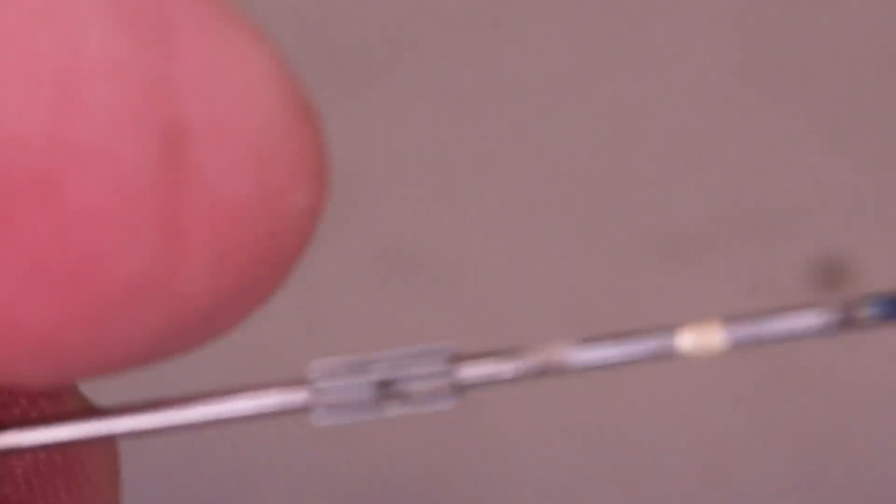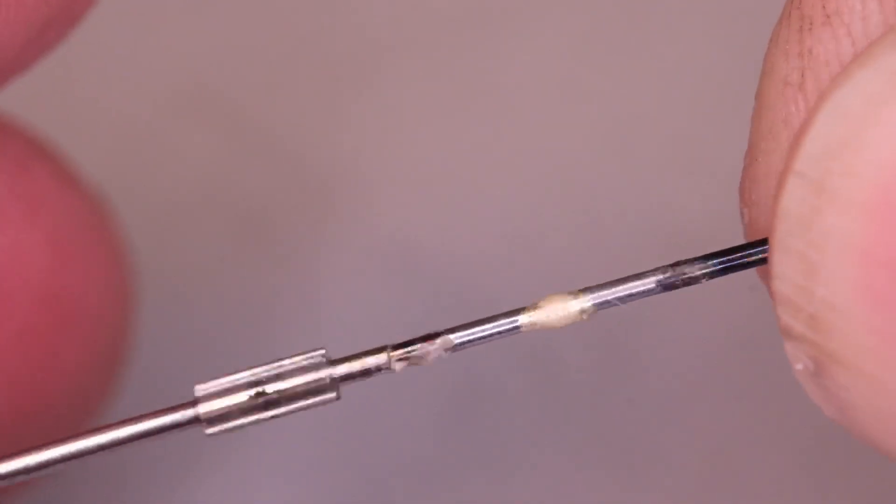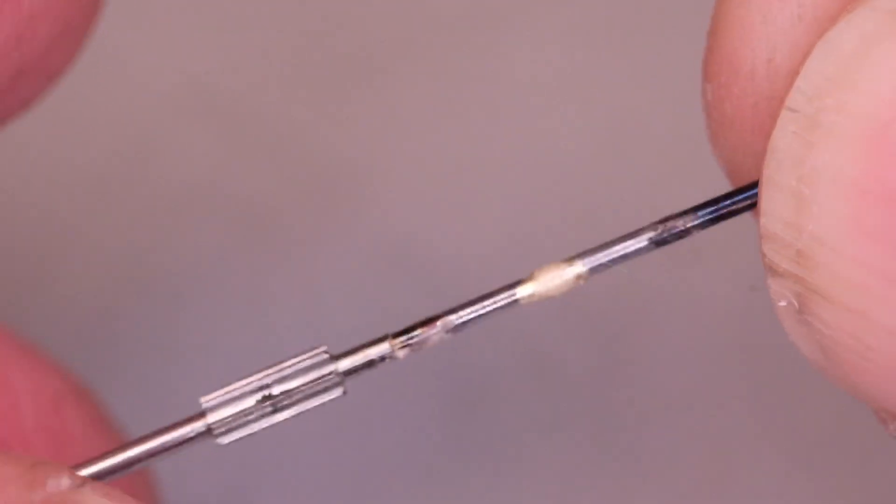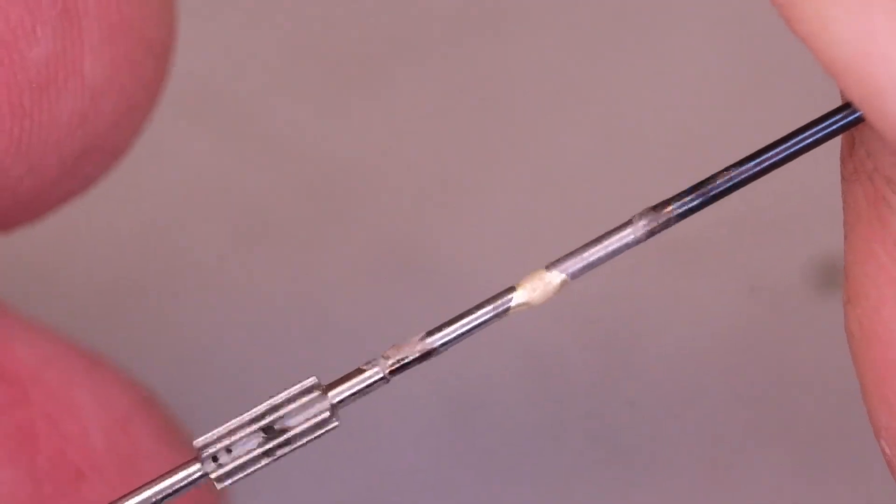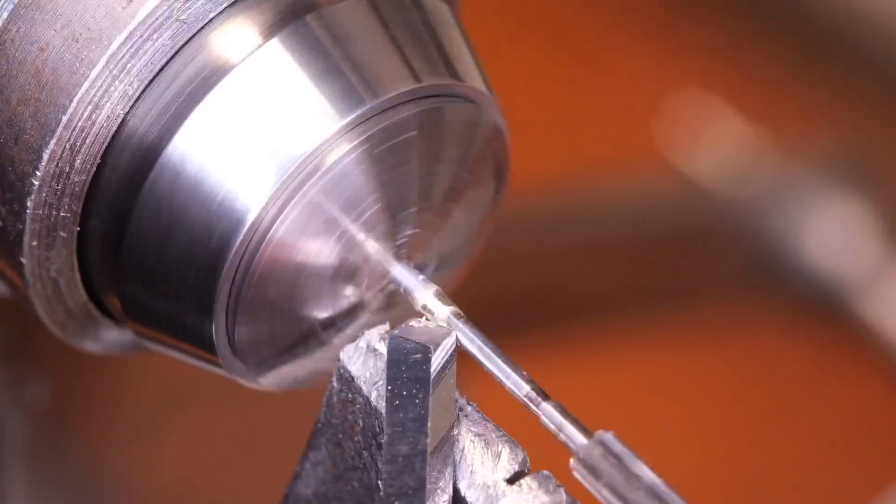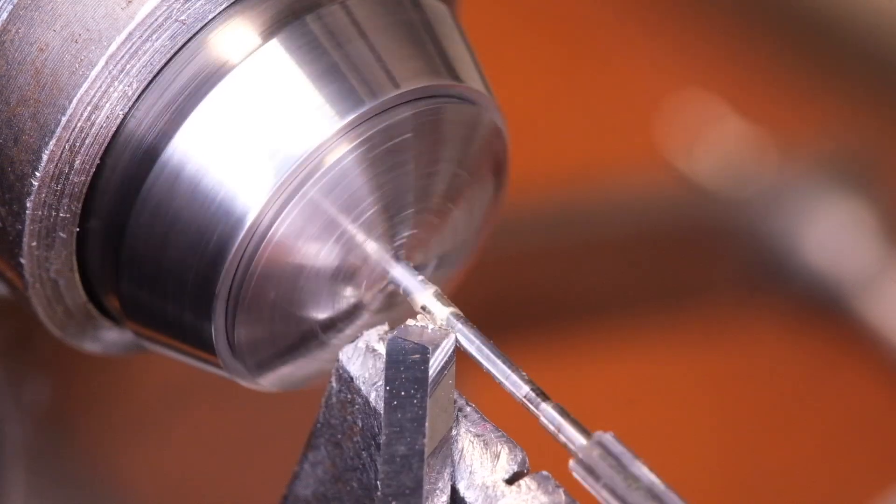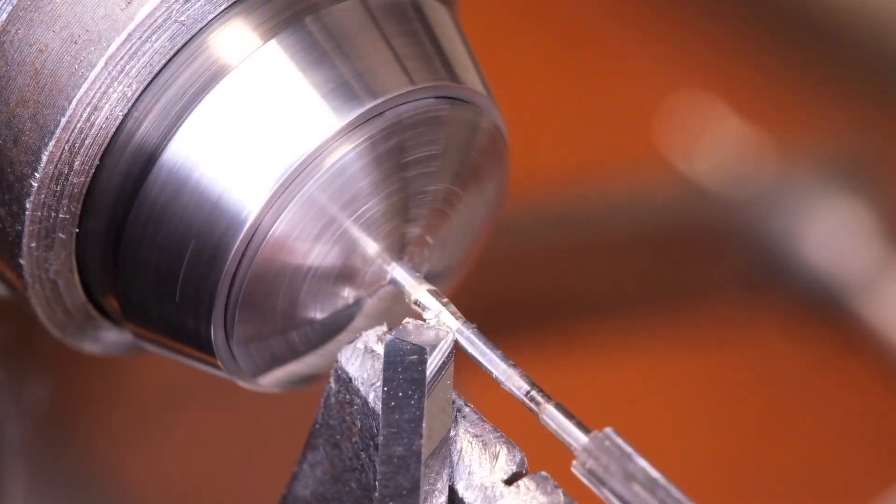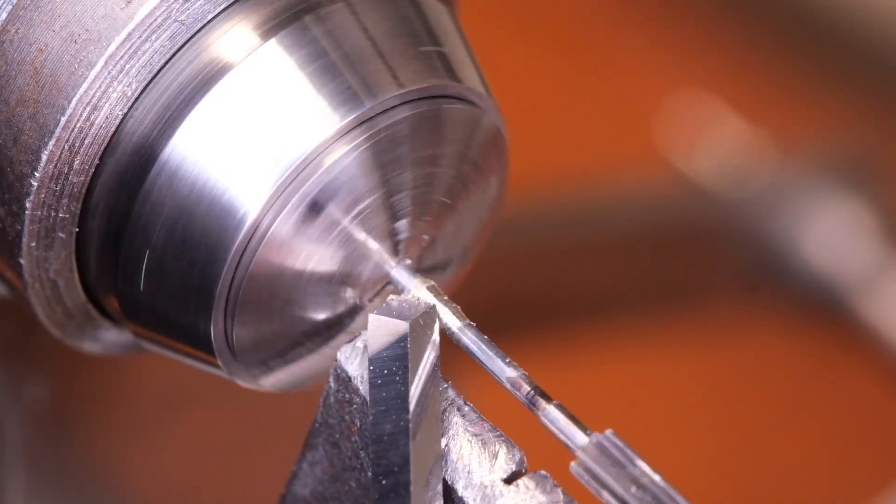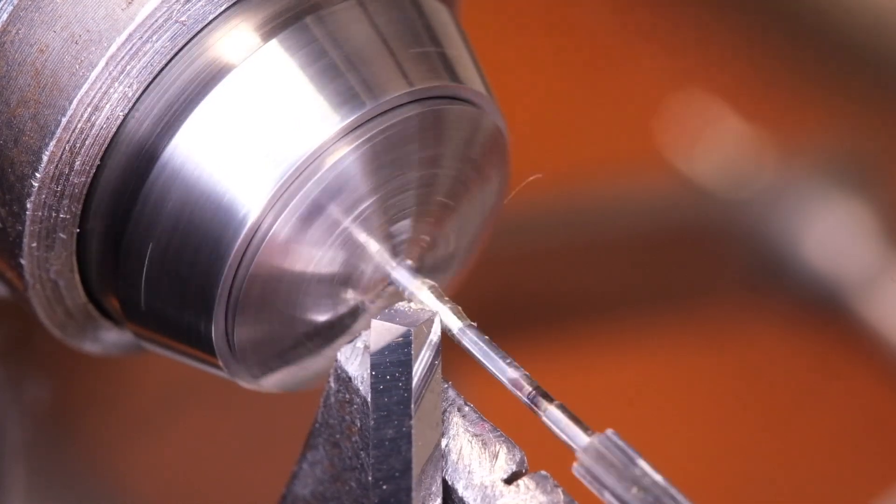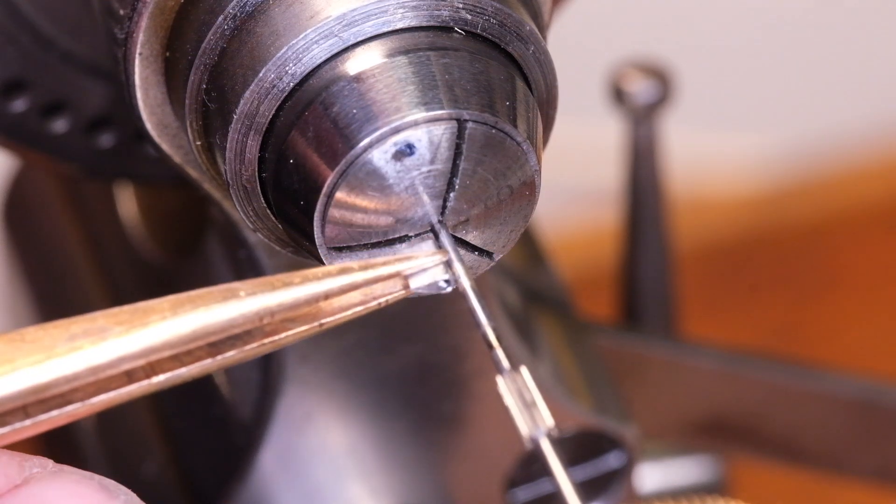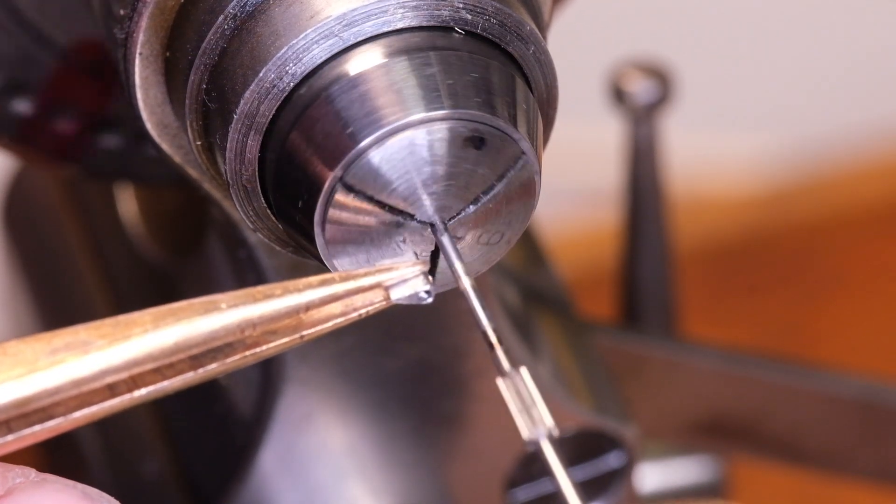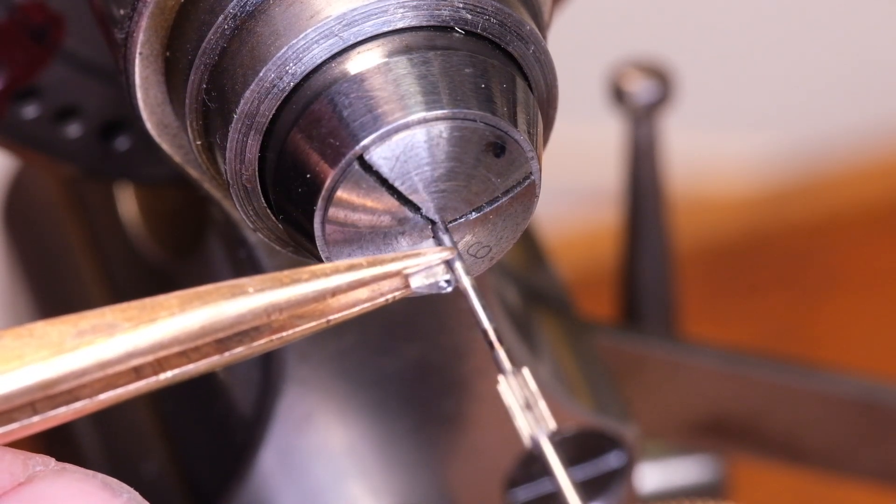So now we have our two components soldered together. It's time to again in the watchmaker's lathe turn off some of that excess material. Once I've done that, and it's just very rough at the moment, I shorten that blue pivot steel by offering up the gathering pallet. Remember we want a tiny bit of arbor sticking out beyond the gathering pallet.